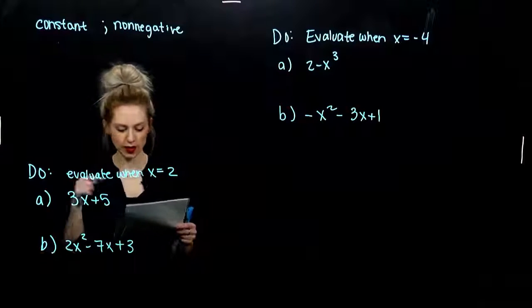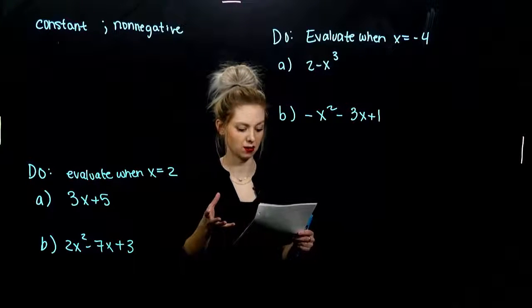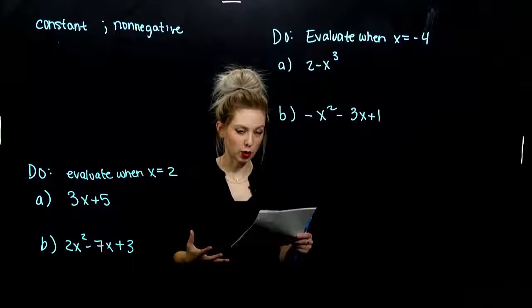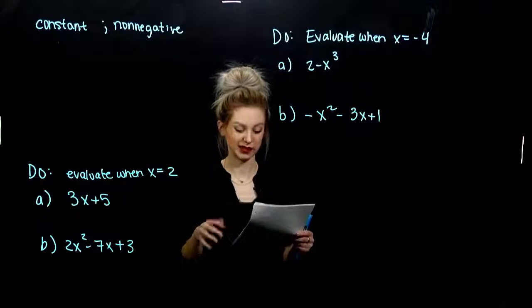A few examples: 2x to the third, 2y, negative 5, even though it doesn't have a variable on there. Its exponent power is zero. It gets rid of the variable. Still a polynomial.